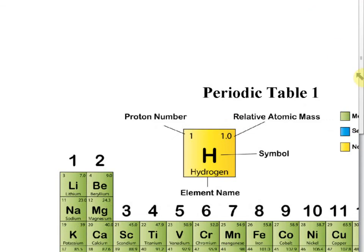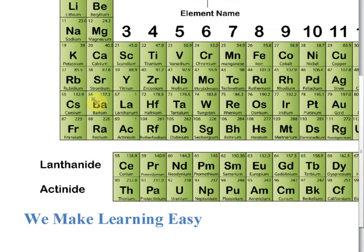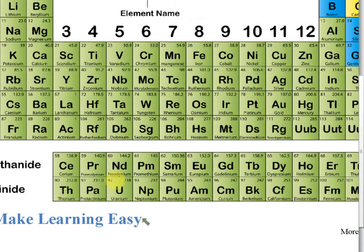If you look at the proton numbers, you'll notice that after 56, it suddenly jumps to 72. That's because elements 58 to 71 — 14 elements — are missing from that row. There isn't enough space in that section, which can only hold 10 elements, so those extra elements are taken out.